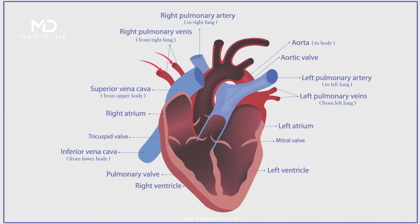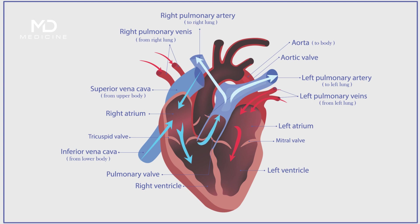The right atrium receives oxygen-deficient, deoxygenated blood from the body. The left atrium collects oxygen-rich, oxygenated blood from the lungs. These two atria converge at the atrioventricular septum, a wall of tissue separating them. The tricuspid valve then opens to allow oxygen-deficient blood to flow from the right atrium into the right ventricle. Next, the left atrium sends oxygen-rich blood to the left ventricle through the mitral valve.